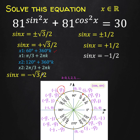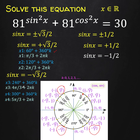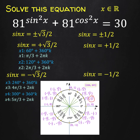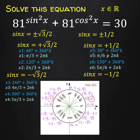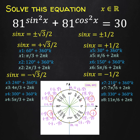For the negative value of square root of 3 over 2, the angle is 240 degrees, giving 4 pi over 3 plus 2 pi k, and another at 300 degrees, giving 5 pi over 3 plus 2 pi k. When sine of x is positive 1 half, the angle is 30 degrees, giving pi over 6 plus 2 pi k, and another at 150 degrees. When sine of x equals negative 1 half, we have angles at 330 degrees and 210 degrees, yielding two more solutions with their corresponding radian measurements.